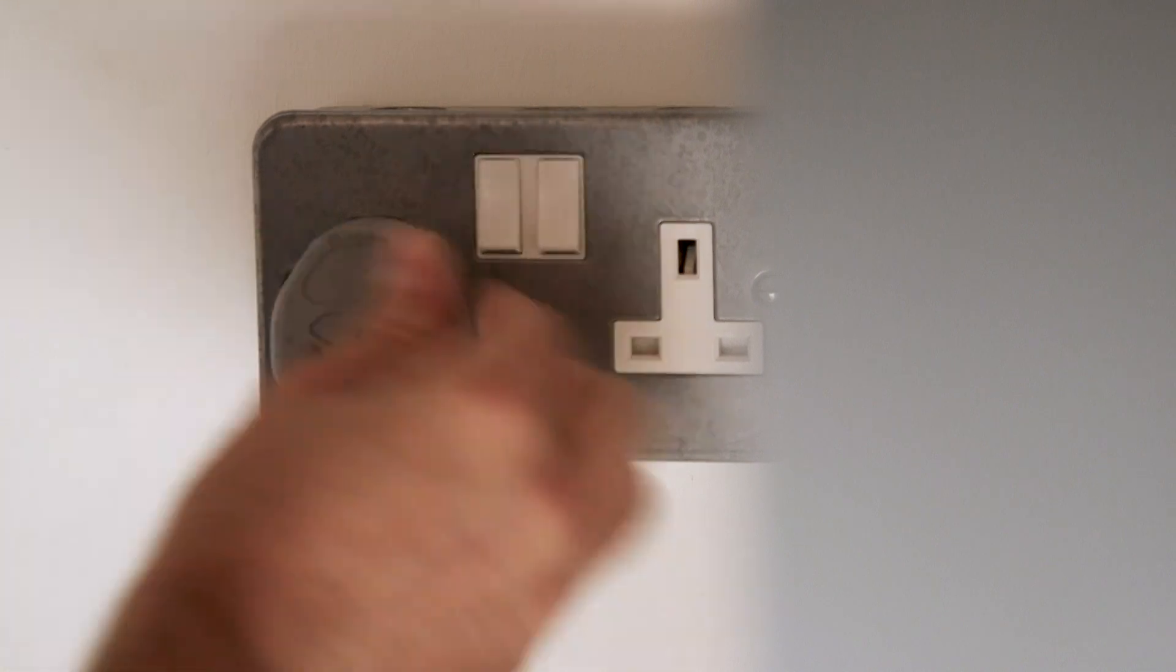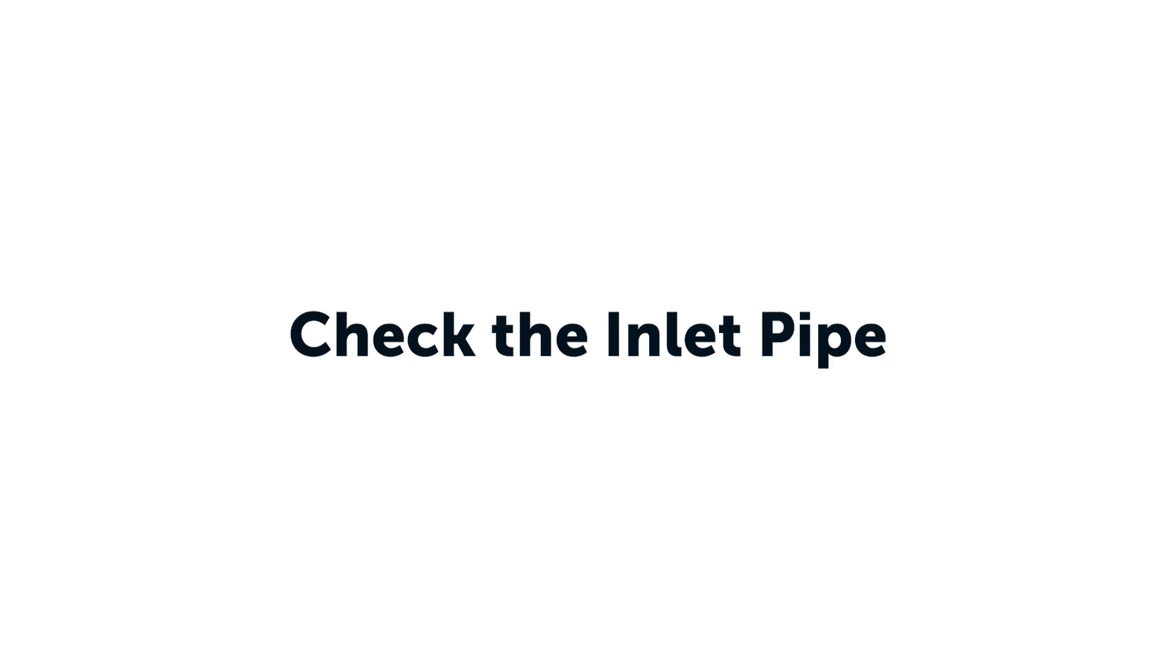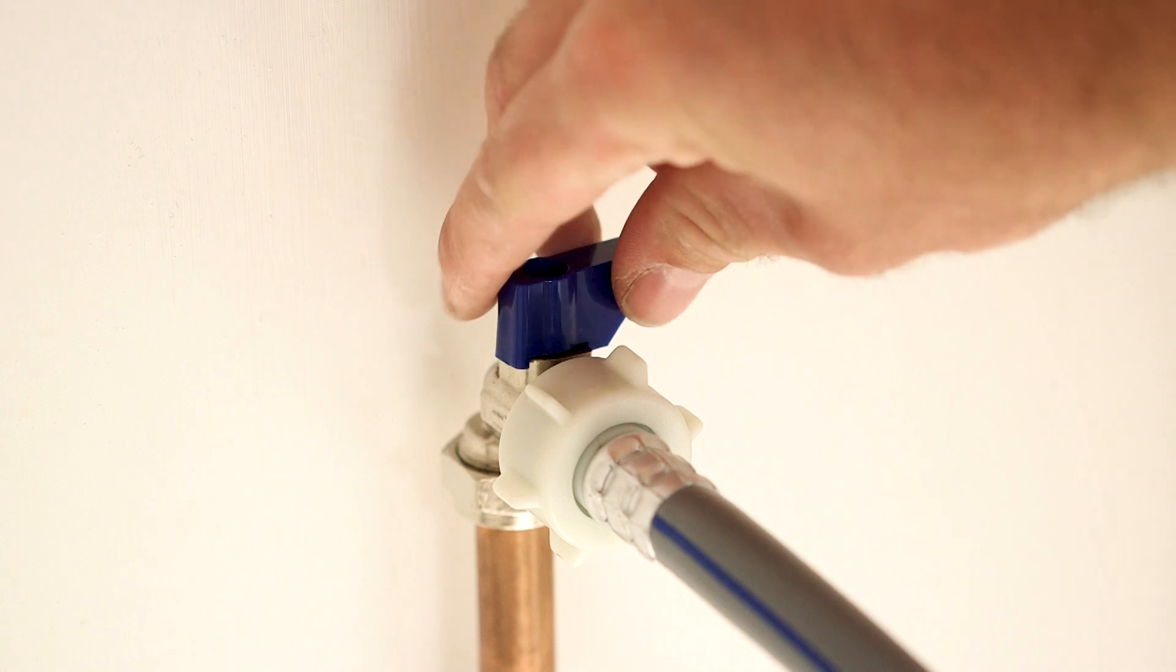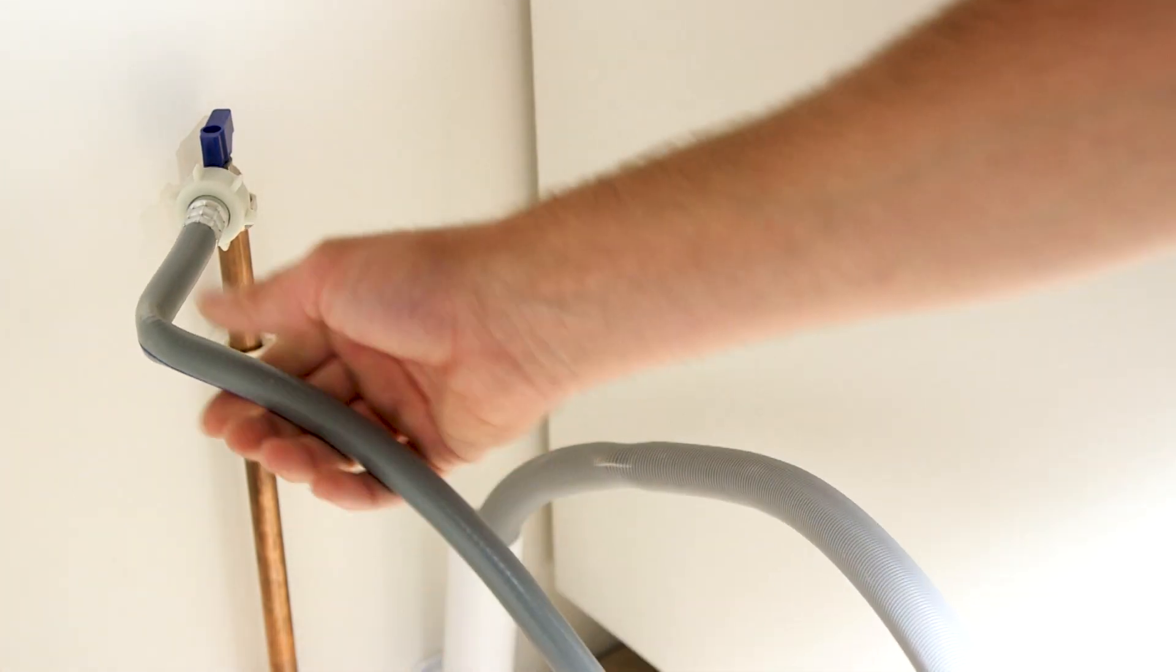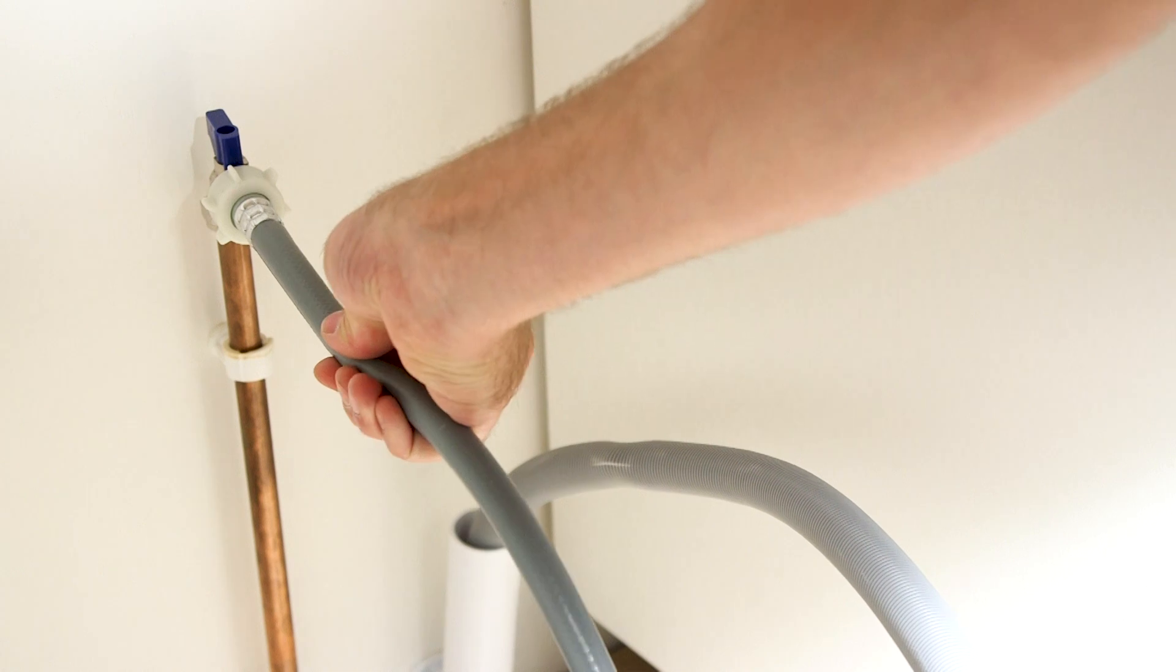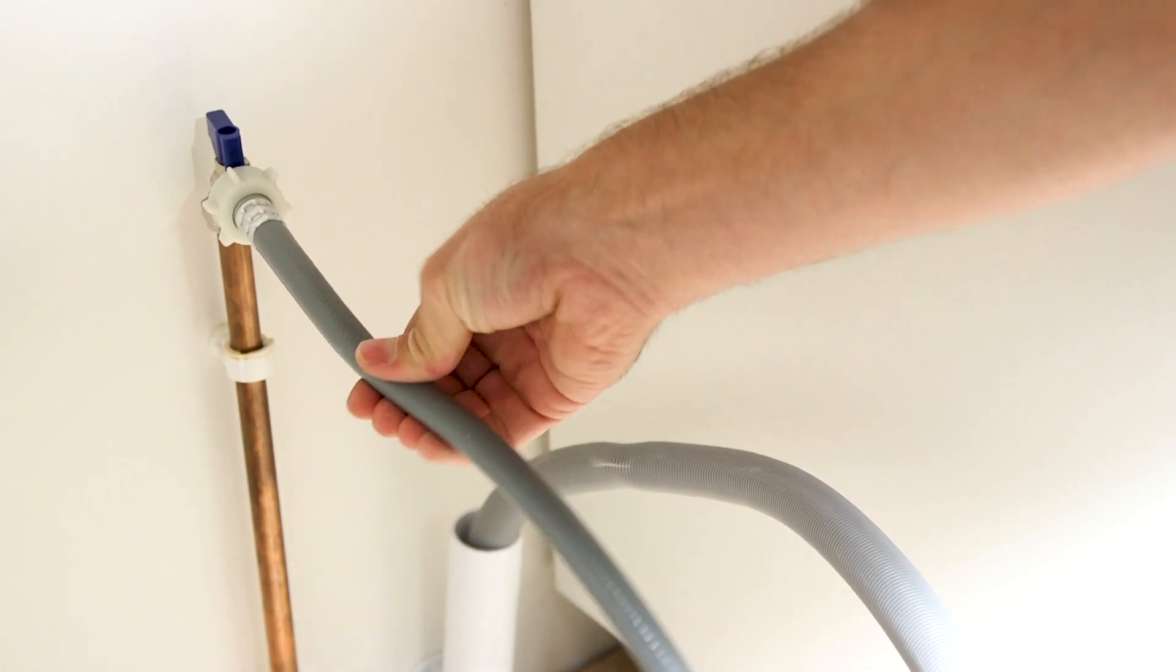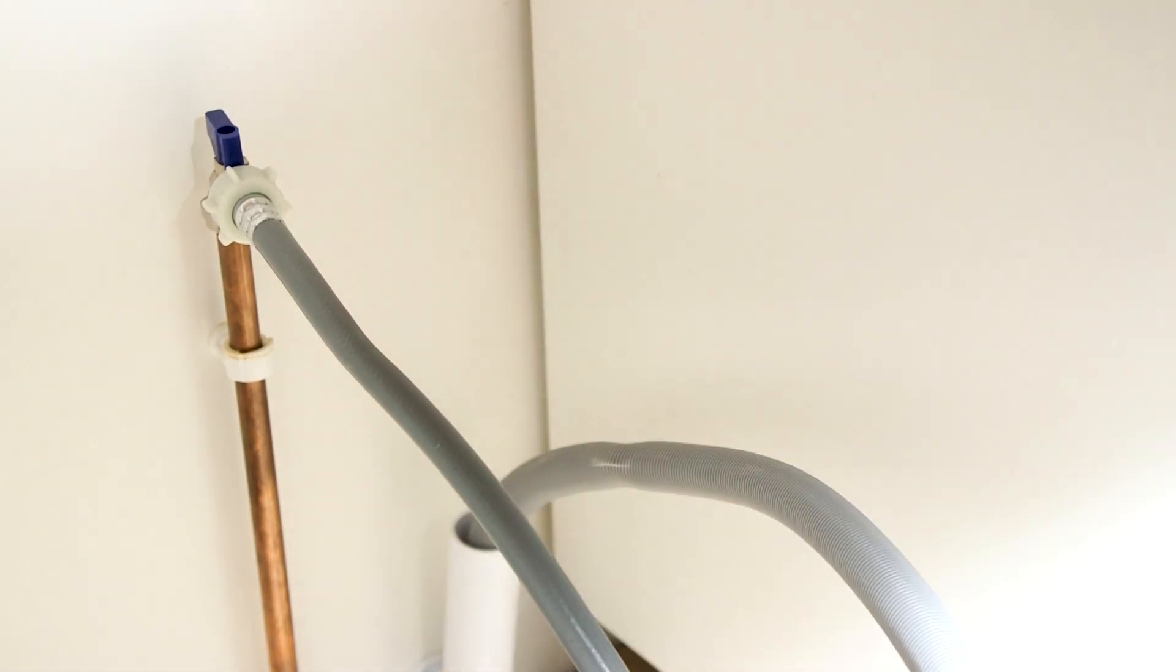If water isn't entering the appliance at all, check that the water tap under the sink is fully open and there are no bends to the inlet pipe. If there are any bends, try to straighten the pipe as this can restrict the water flow.